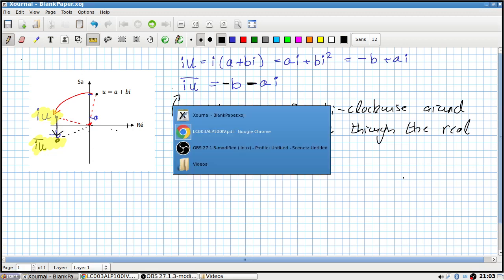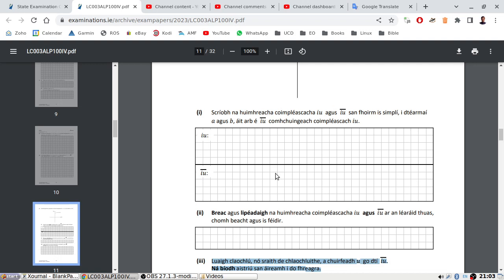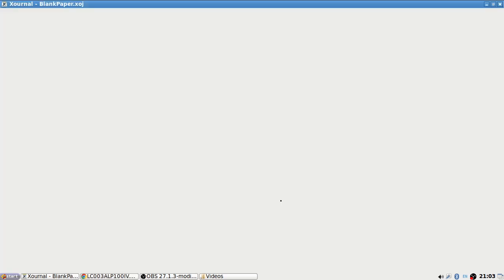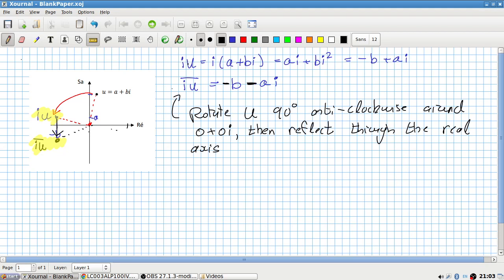Yeah, okay. Calculate them, plot them, and describe the last transformation. So i u, let's double check, i times a, yep, and then b i squared which is minus b, and then conjugate only changes the sign of the a. And then describe the transformation. So you take your starting point u, you rotate at 90 degrees through the, or around the origin, that is anti-clockwise, and then reflect through the real axis.